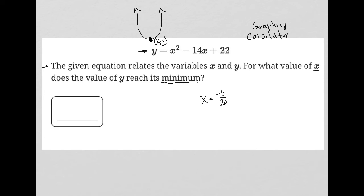Where am I getting these letters from? I'm getting this from y equals ax squared plus bx plus c. It's just our generic quadratic equation structure, which means that since there's no coefficient in front of the x squared, our a is 1. Our b is negative 14, and our c is 22, just positionally.